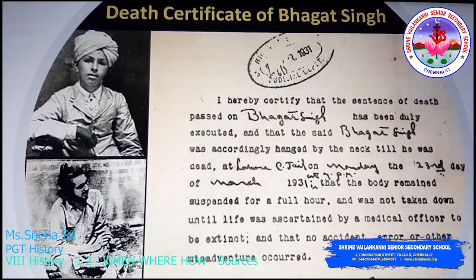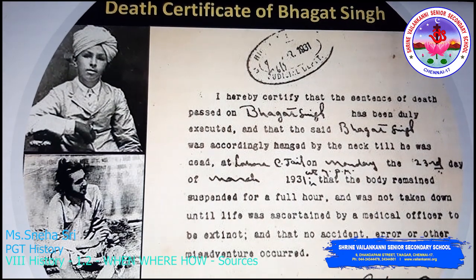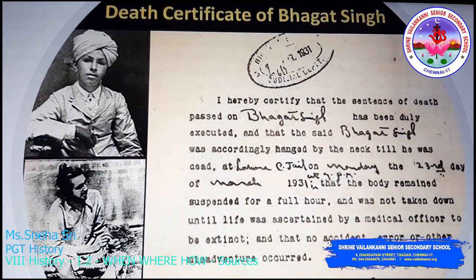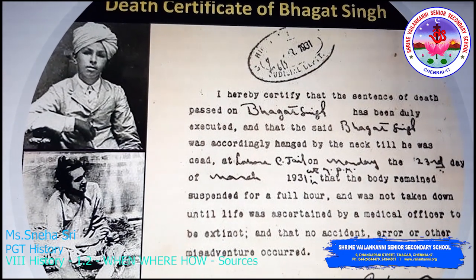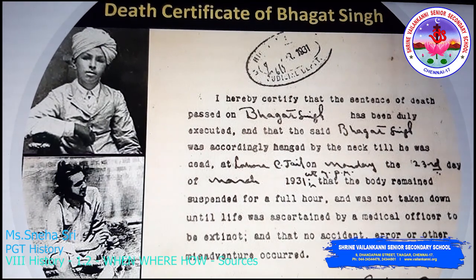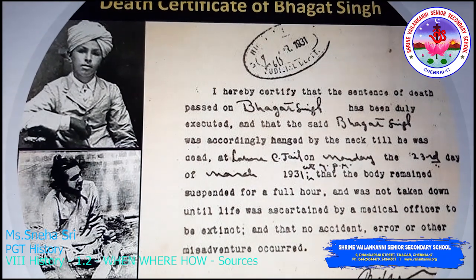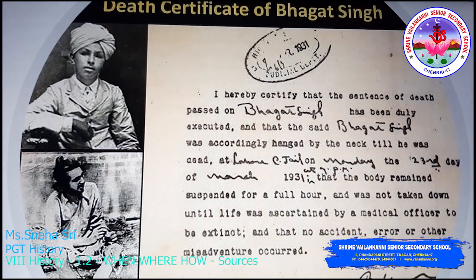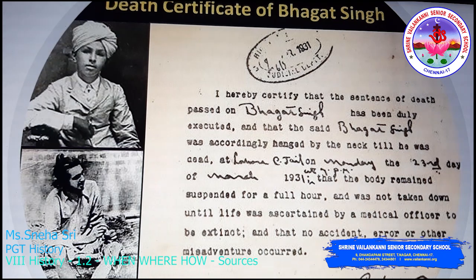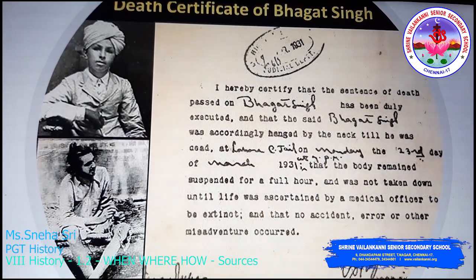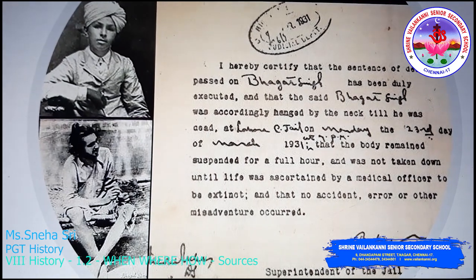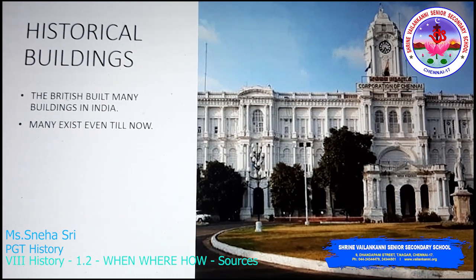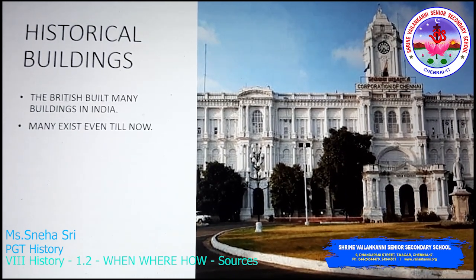Another example of a document is the death certificate of Bhagat Singh: 'I hereby certify that the sentence of death passed on Bhagat Singh has been duly executed — that Bhagat Singh was accordingly hanged by the neck till he was dead at Lahore Central Jail on Monday, the 23rd day of March 1931. The body remained suspended for a full hour and was not taken down until life was sustained to be extinct by a medical officer, and no accident, error, or other misadventure occurred.' It is officially signed by the superintendent of jail.